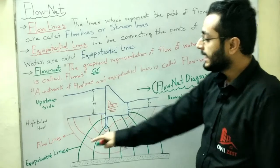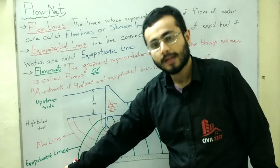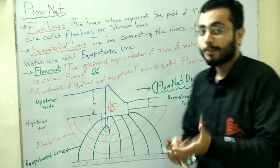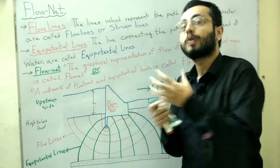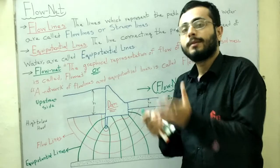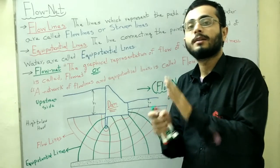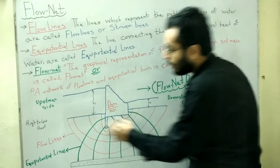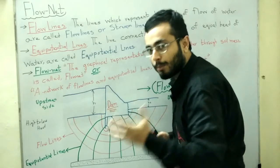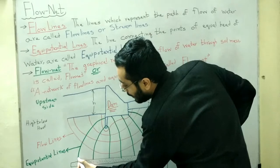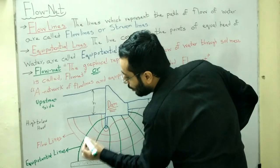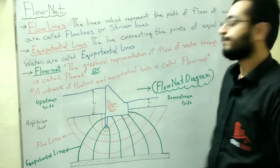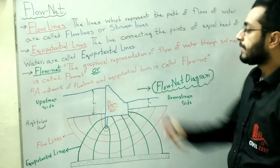The green lines are our equipotential lines. By definition, they connect points of equal head — where head means potential, mechanical or pressure energy. Any point on these green lines is at the same potential, meaning all selected points on one green line are at the same energy in the soil structure.